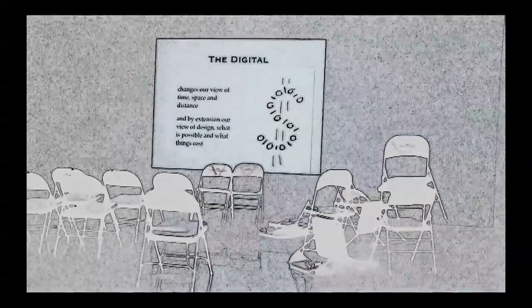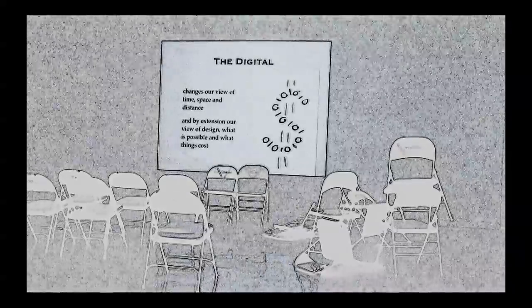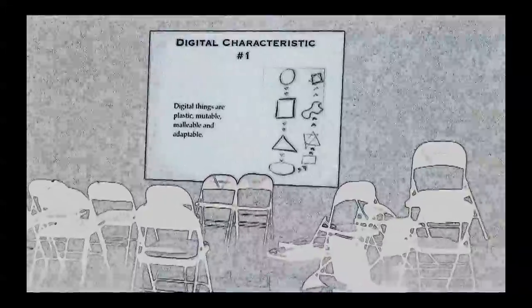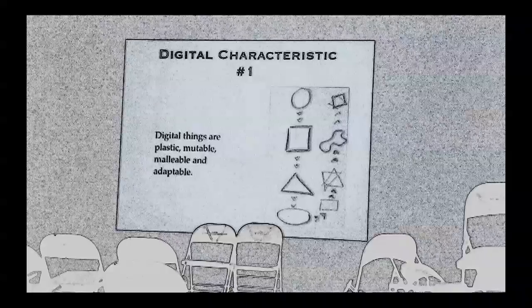The digital changes our view of time, space, and distance, and by extension, our view of design, what is possible, and what things cost. Digital things are plastic, mutable, moldable, and adaptable.